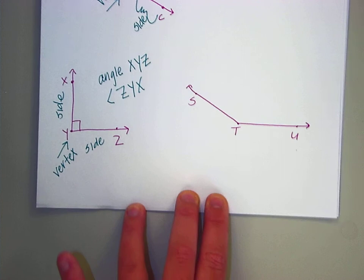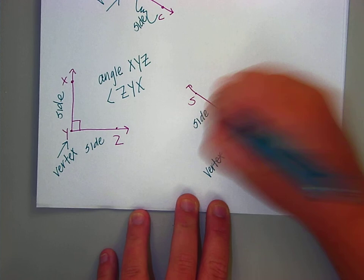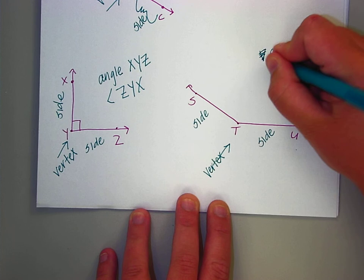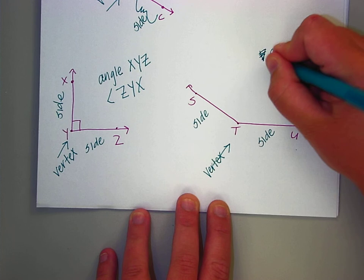And finally, this one is your vertex. This is a side. This is a side. So we could say angle STU or angle UTS. So just make sure the vertex is always, always in the center when naming an angle.